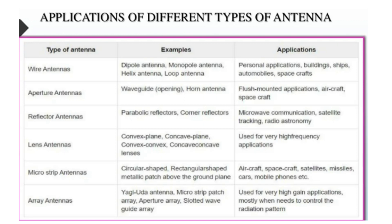Wire antenna examples include dipole, monopole, helix, and loop. Applications include buildings, ships, automobiles, and spacecraft. Aperture antennas include waveguide and horn antenna. Flush mount applications include aircraft and spacecraft.